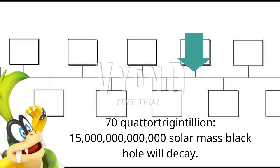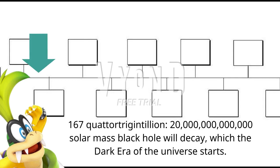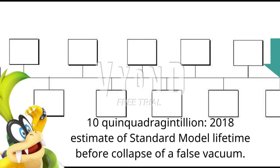70 Quattrigentillion: a 15 trillion solar mass black hole will decay. 167 Quattrigentillion: a 20 trillion solar mass black hole will decay — this is when the dark era of the universe starts. 10 Quattrigentillion: the 2018 estimate of the standard model lifetime before collapse of a false vacuum.